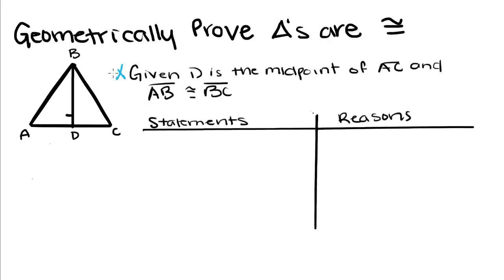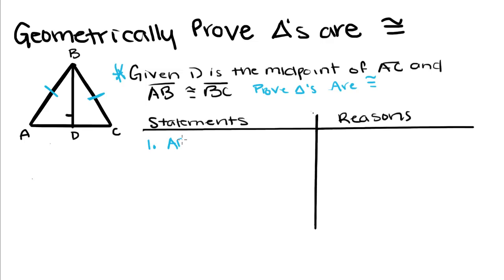We're always going to start off with a given statement. Given: D is the midpoint of AC and AB is congruent to BC. The directions say prove triangles are congruent. First, we want to take note of the information they give us. We know that AB is congruent to BC, and that's always going to be our first step. Our first statement is AB is congruent to BC, and our reason for that is simply given, because we're told that that's true.